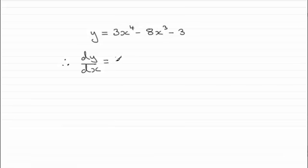So you've got 4 times 3 is 12, so you're going to get 12. Then you reduce the power by 1, so if we take off 1 from the power, it's going to give us 12x to the power 3, 12x cubed.